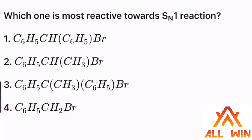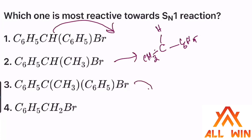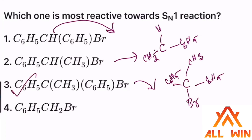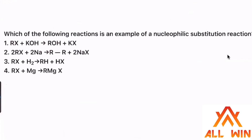How many carbons does the compound have? The structure is CH3, CH3, Br. It is a third carbon — a tertiary carbocation. A tertiary carbocation is the most stable intermediate, so it follows from this.